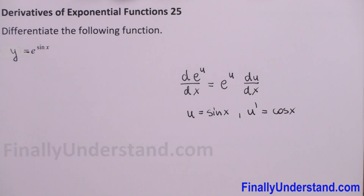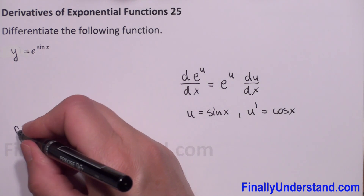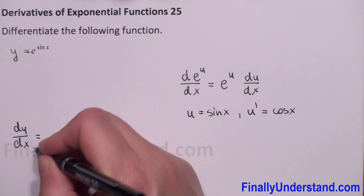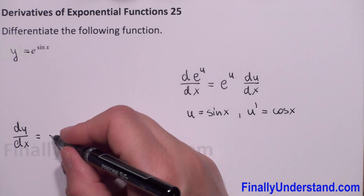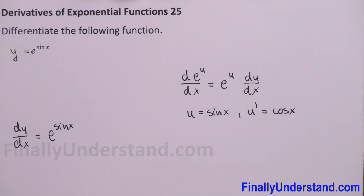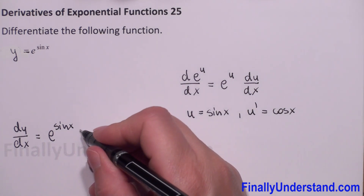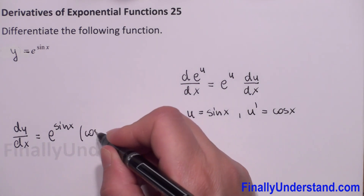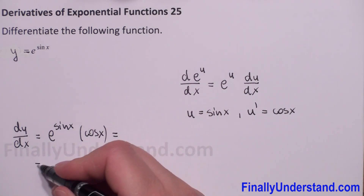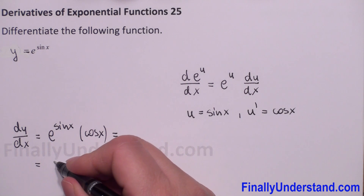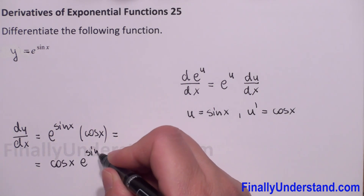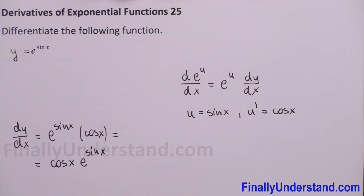Now we can substitute: the derivative of y with respect to x is equal to e to the power sine of x, times the derivative of sine, which is cosine of x. We can put cosine first, so it's cosine of x times e to the power sine of x. This is the solution.